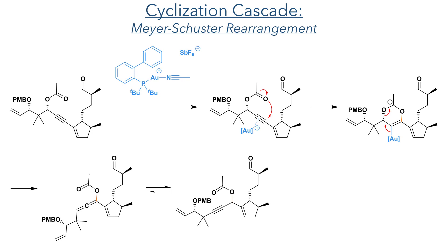With this aldehyde now in place they could carry out the critical cyclisation cascade. This cascade is promoted by Echavarren's catalyst, which is the gold complex of the JohnPhos ligand together with an acetonitrile ligand and a hexafluoroantimonate counter ion. In the first step of the cascade, this promotes a Meyer-Schuster rearrangement by first coordinating to the alkyne, allowing the carbonyl oxygen of the acetate group to attack the carbon and promote the cleavage of the carbon-oxygen bond, overall completing a 1,3-migration to generate a product with an allene that is in equilibrium with an alkyne.